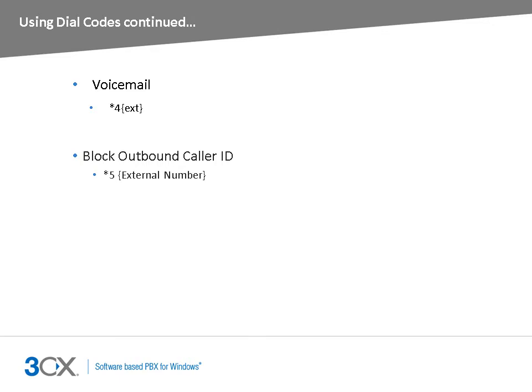The star 5 dial code instructs the PBX to not send your caller ID when making an outbound call. Note that when using this feature with VoIP providers, you must first contact your VoIP provider and inform them that you would like to use this feature, as not all VoIP providers support blocking caller IDs. To use this dial code, simply dial star 5 followed by the number you wish to dial. The receiving party will see the caller details as private number.